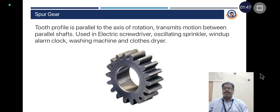Spur gear: The tooth profile is parallel to the axis of rotation. It transmits motion between parallel shafts and is used in electric screwdrivers, oscillating sprinklers, wind-up alarm clocks, washing machines, and clothes dryers.